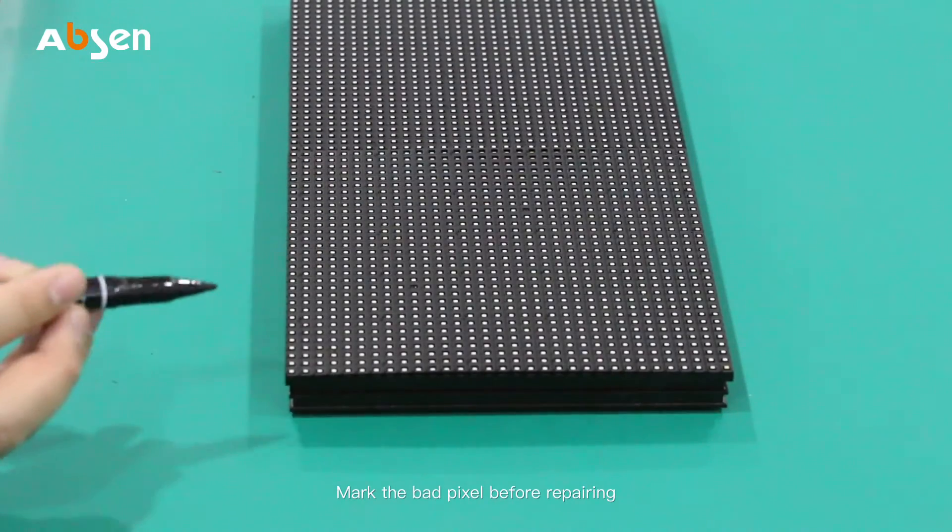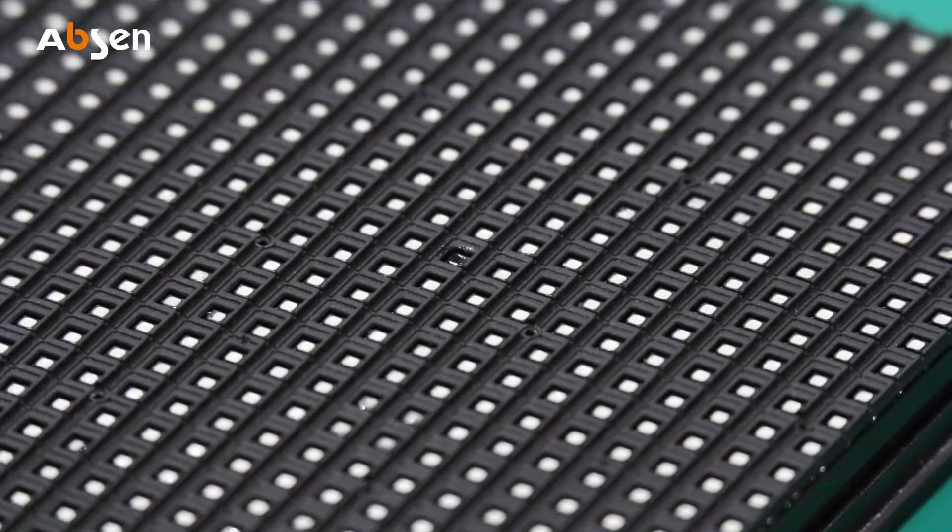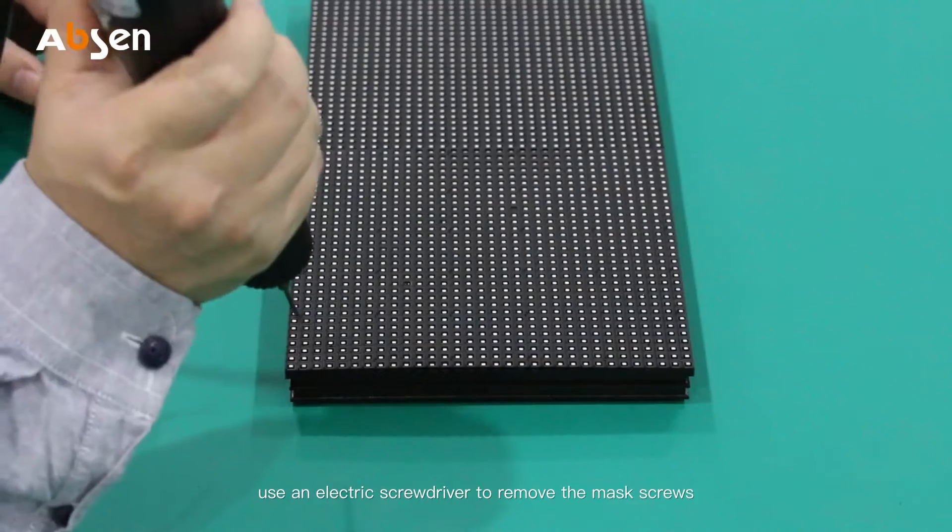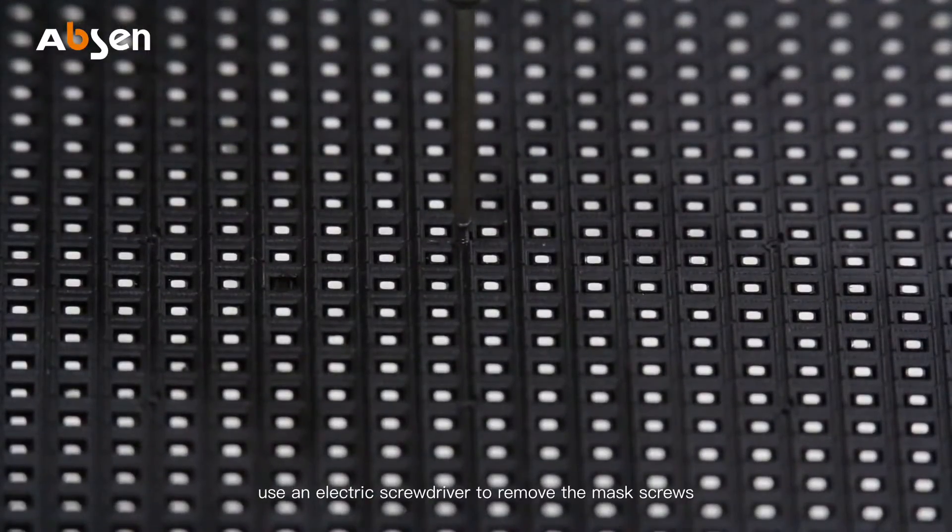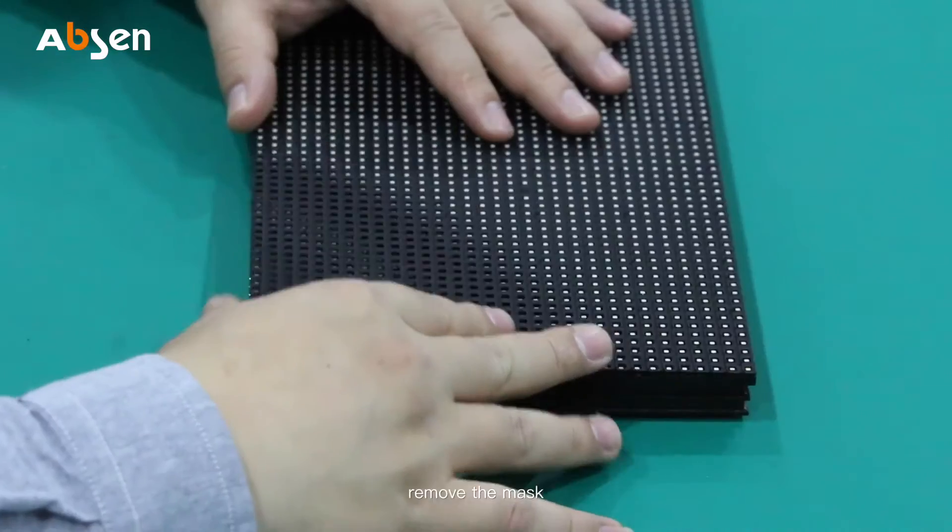Mark the bad pixel before repairing. Use an electric screwdriver to remove the mask screws. Remove the mask.